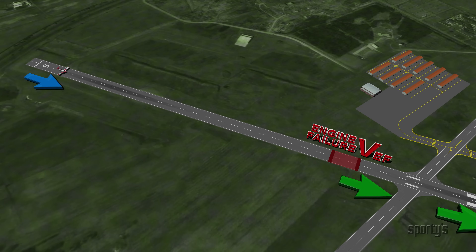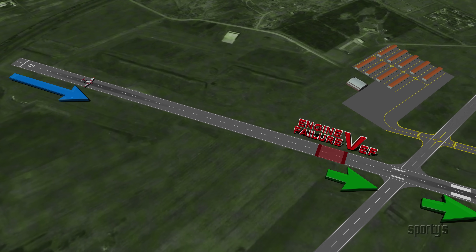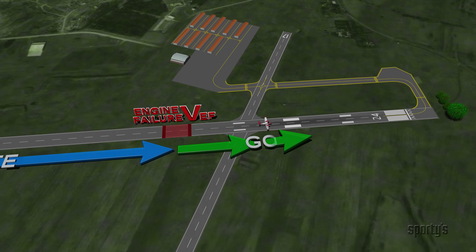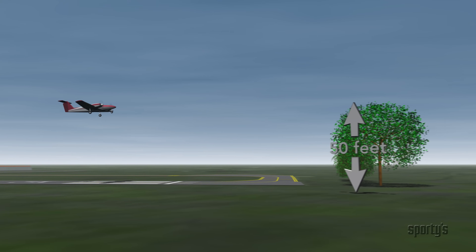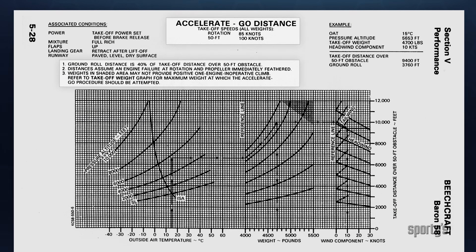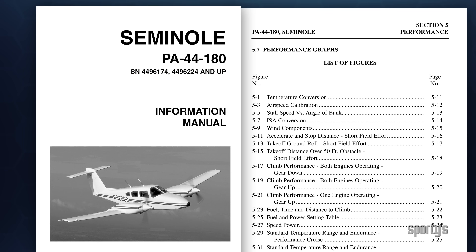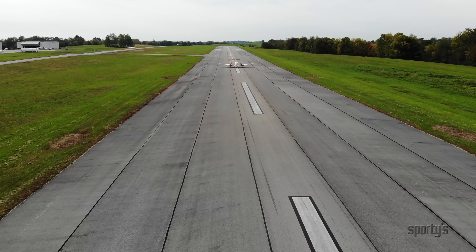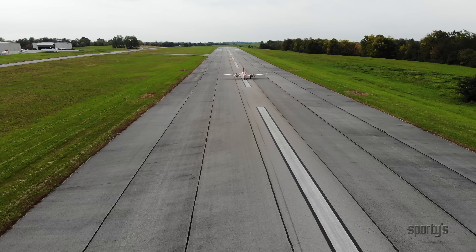The accelerate go distance starts out the same as accelerate stop. The aircraft starts at zero and accelerates to a specified speed. At the specified speed, known as VEF, an engine is assumed to fail and the takeoff is continued. The accelerate go distance is the distance from the start of the takeoff roll until climbing over 50 feet above the ground. In many light twins with an accelerate go chart, VEF is assumed to be the liftoff speed. If the manufacturer of your airplane did not include an accelerate go chart, there's probably a reason why. Do not plan to continue a takeoff after an engine failure without this information unless sufficient speed and altitude have been obtained.